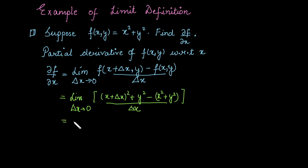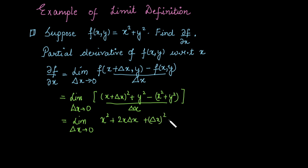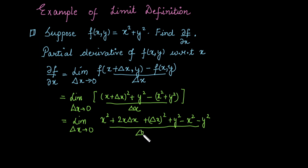Simplifying this, we have the limit as delta x approaches 0. Expanding, we get x squared plus 2x·delta x plus delta x squared plus y squared, minus x squared minus y squared, all divided by delta x. The x squared terms cancel with each other, and similarly the y squared terms cancel with each other.